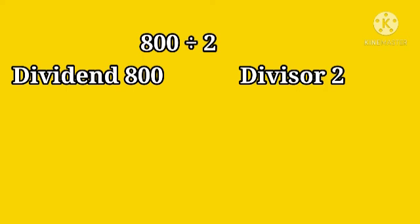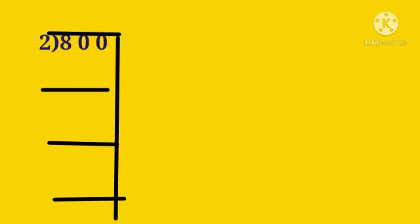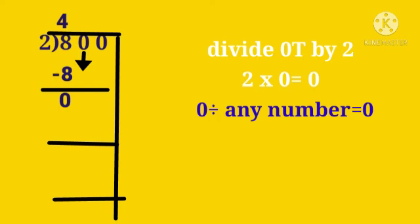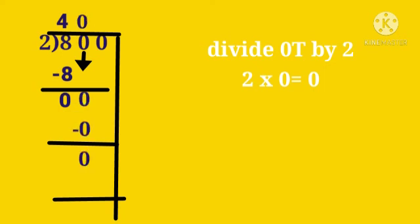Now, next sum here. 800 divided by 2. The dividend is 800 and the divisor is 2. So, let us divide 800 by 2. So, in 2 ones table, 2 fours are 8. So, write 4 in the 100th place of the quotient. So, 8 minus 8 is 0. Now, next what is there? 0. Yes. Let us divide 0 tens by 2. So, 2 zeros are 0. 0 divided by any number is 0. So, let us write 0 in the 10th place of the quotient. So, 0 minus 0? 0.